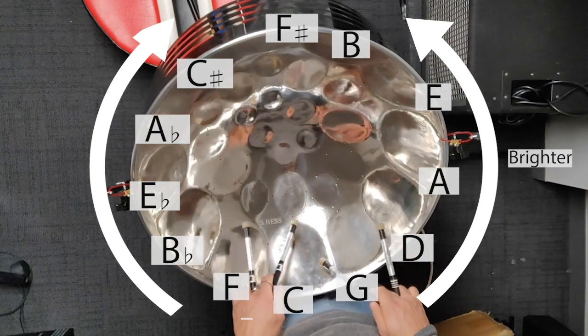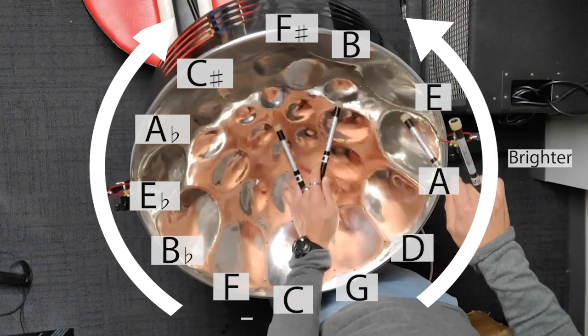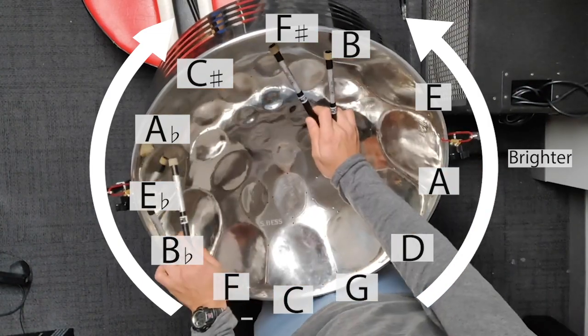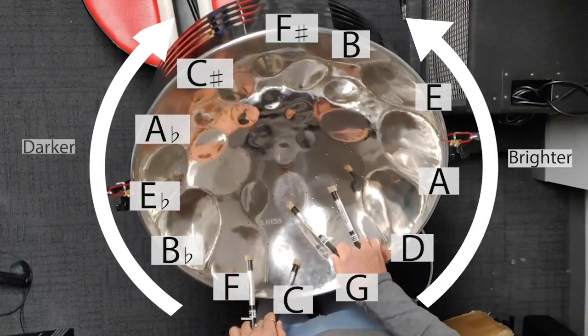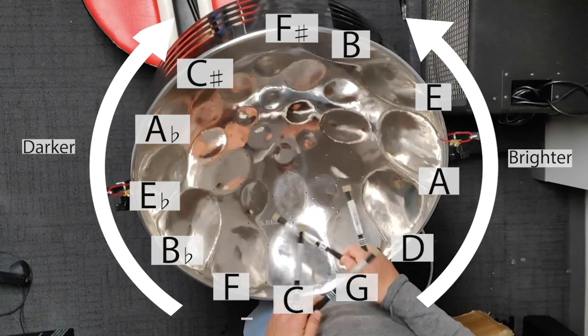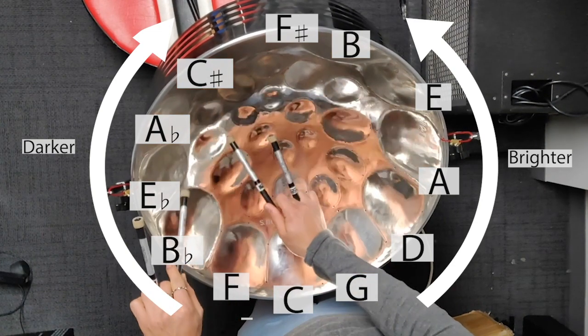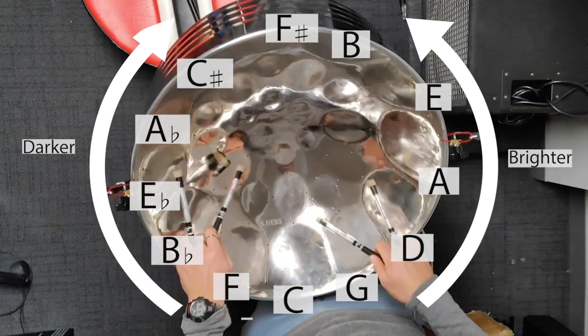Brightening by five would mean going five steps. So I go from C major to one, two, three, four, five, B major. So if I wanted to darken C major by three, that means going three steps to the left. One, two, three, and we end up in E flat major.